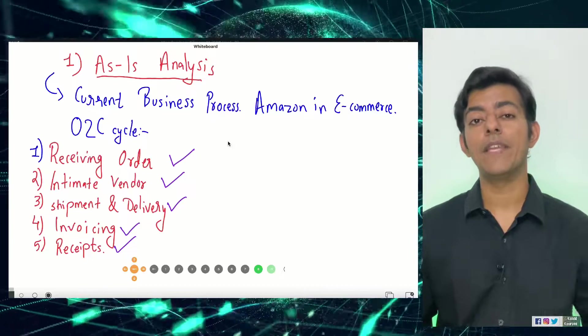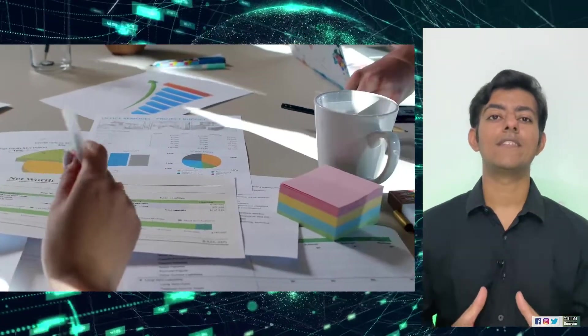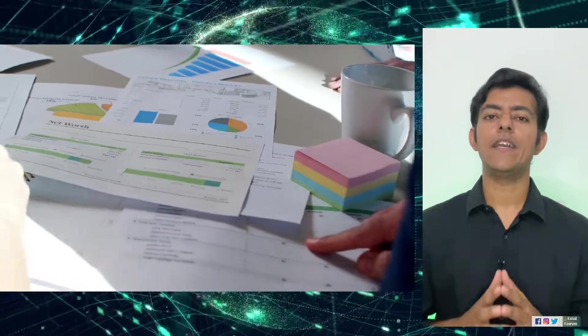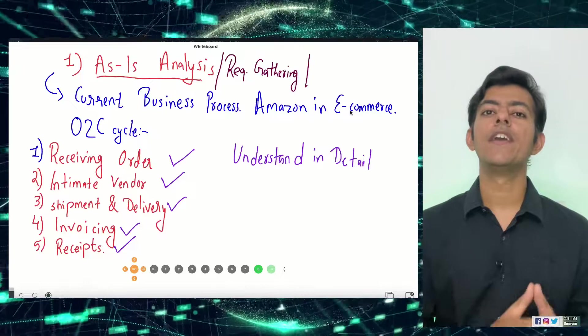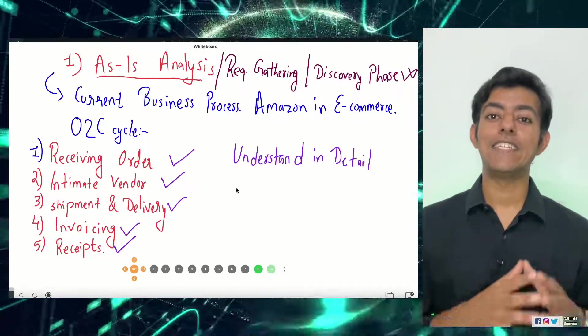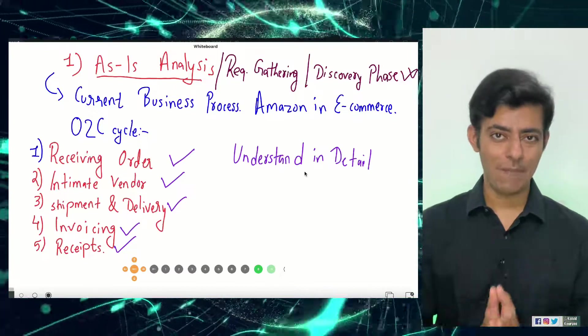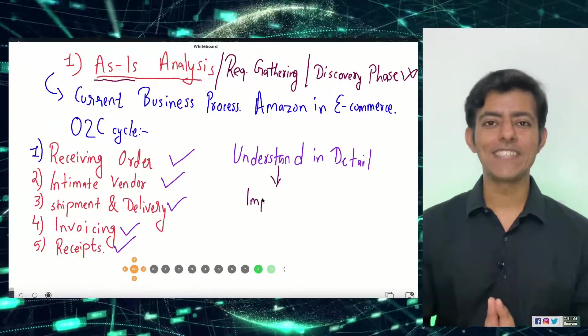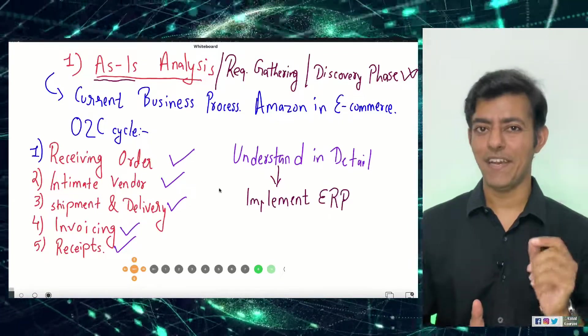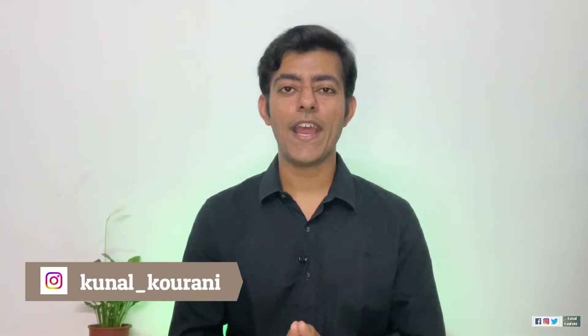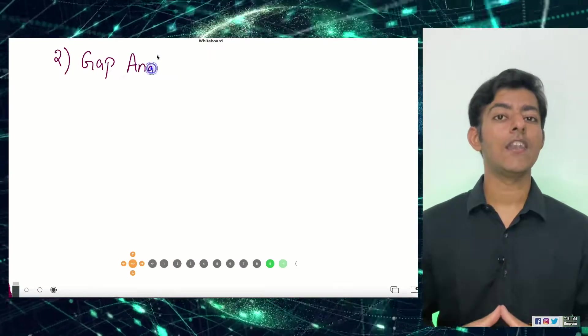The ERP consultant will understand each and every step of this order-to-cash process — how Amazon is receiving orders, how they are intimating vendors, how vendors are shipping and delivering goods, how the customer gets an invoice, and how payment is received. The consultant will document all of this. So the very first step in ERP implementation is AS-IS analysis, also called requirement gathering or the discovery phase, because the ERP consultancy company is discovering what is the current business of Amazon. After this, the ERP consultant will do the gap analysis.